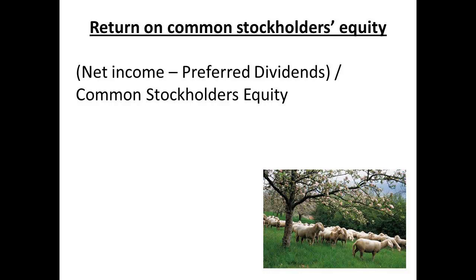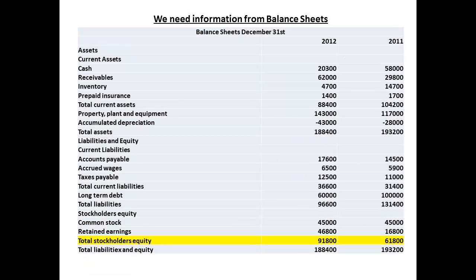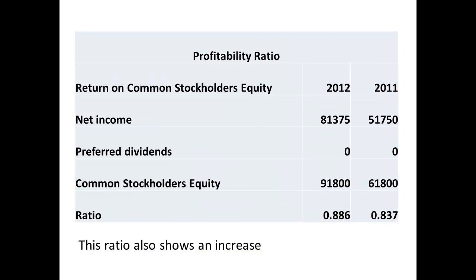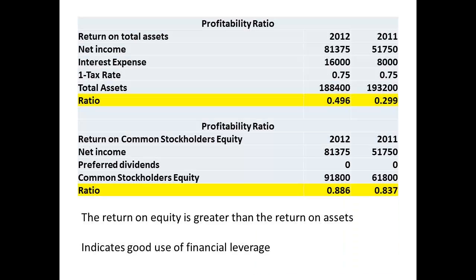Finally, in this section, the return on stockholders' equity. The net income, less any preferred dividends, is divided by the common stockholders' equity. The figures from the income statement and balance sheet have been highlighted. The ratio shows a small increase, from 0.837 in 2011 to a value of 0.886 in 2012. An important consideration is the financial leverage of a business — this looks at the amount of assets financed by debt as opposed to equity. Here, the return on equity is greater than the return on assets.